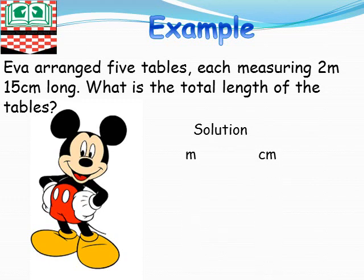So, we write our unit first. Write out two meters, 200 meters, then 15 under centimeters. Then we multiply by five.